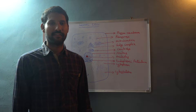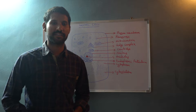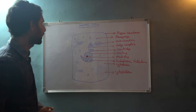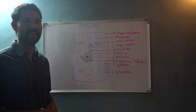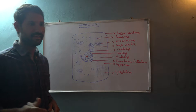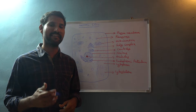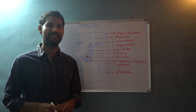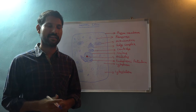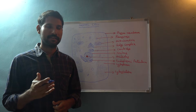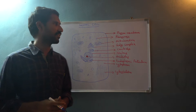Today we'll be talking about animal cell — the structure of the animal cell. Animals have various types of cells. For example, in human beings there are many different types of cells, such as nerve cells and blood cells.